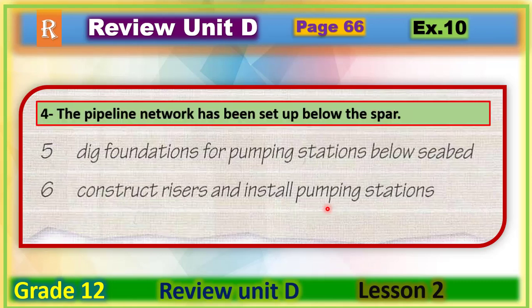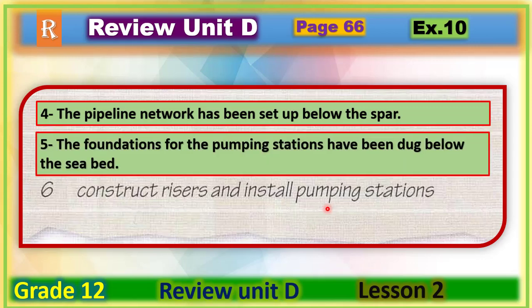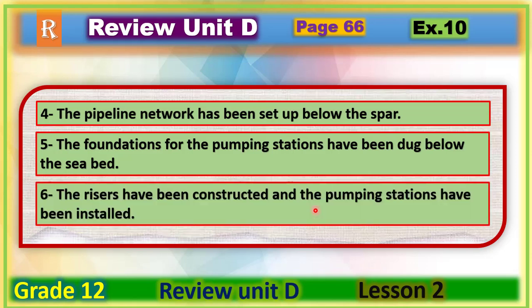Sentence five: 'Dig foundations for pumping stations below the seabed' becomes 'The foundations for the pumping stations have been dug below the seabed.' Note we used 'have' because we are talking about a plural noun. The last sentence, number six: 'Construct risers and install pumping stations' becomes 'The risers have been constructed and the pumping stations have been installed.'